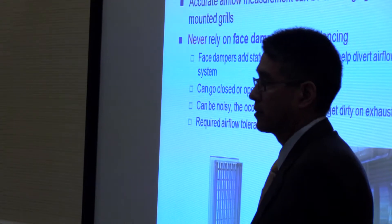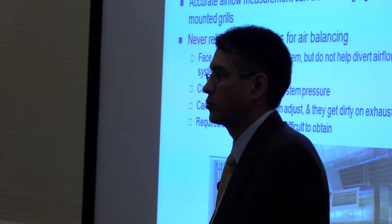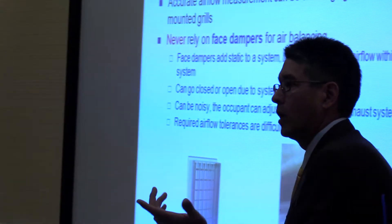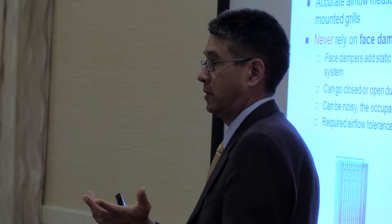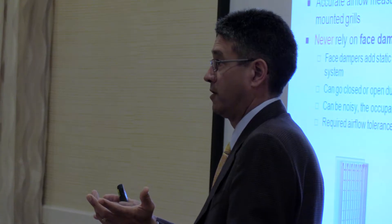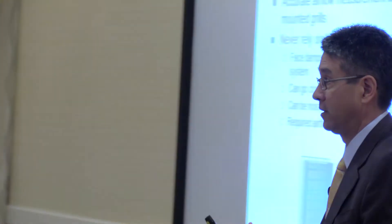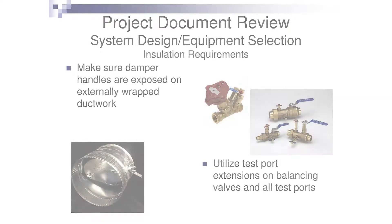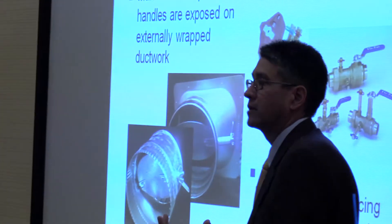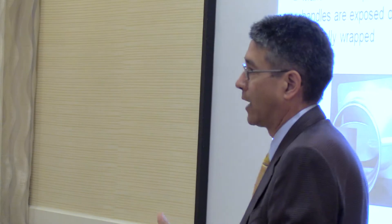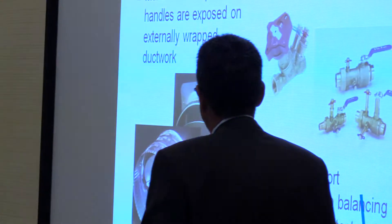Face dampers can be noisy, they go open and closed, and get very dirty on exhaust systems. Anytime you can caution on face dampers when looking at a job, look at different options. On automatic flow control devices for airflow — a contractor who put them in said preliminary testing showed it wasn't even close. Also, when you have dampers and balancing valves installed, make sure the insulation spec and the insulator are all on board, and that all extension ports are provided to get the handle outside the insulation — extension ports are a very big benefit on a job.